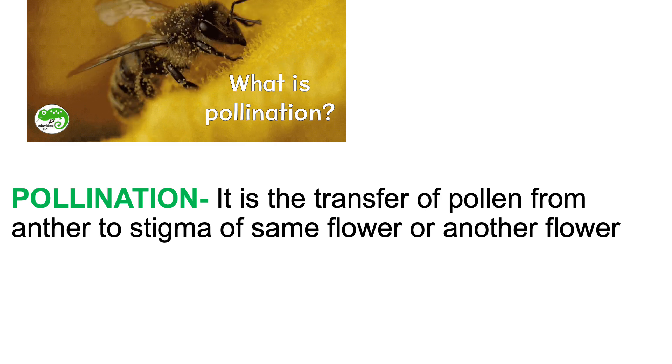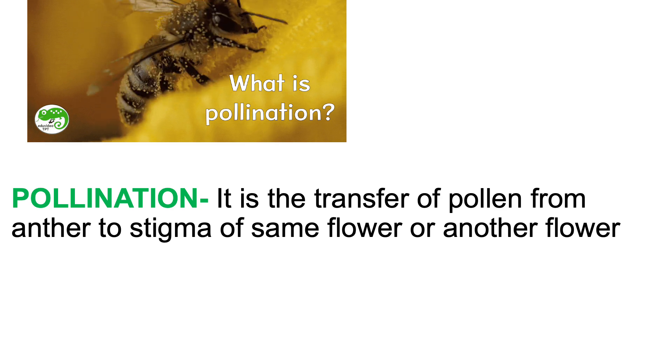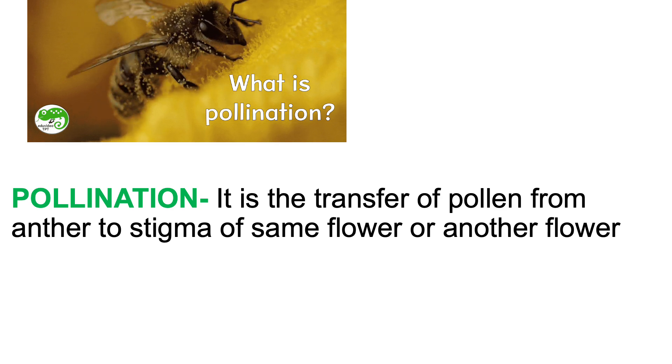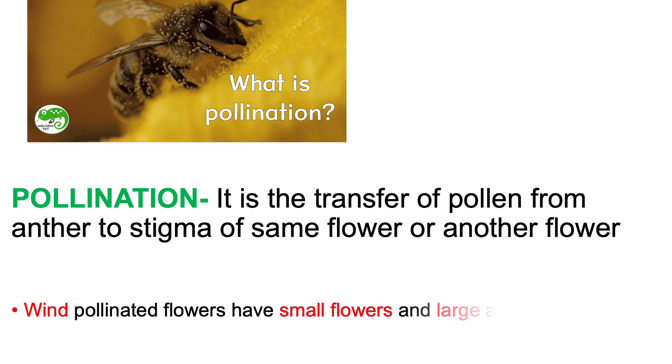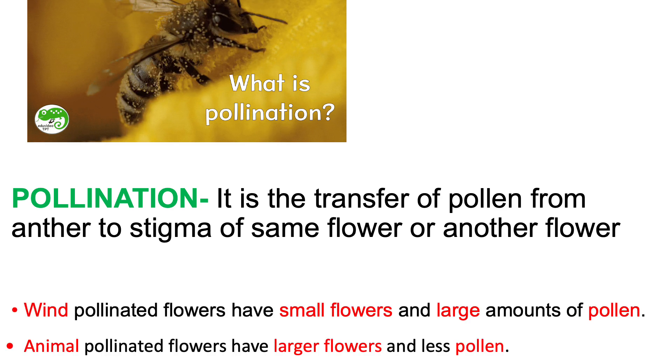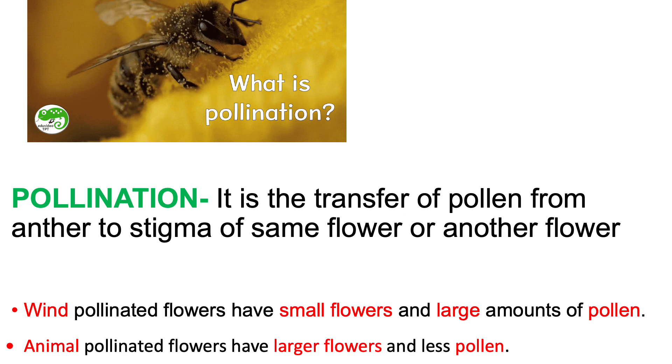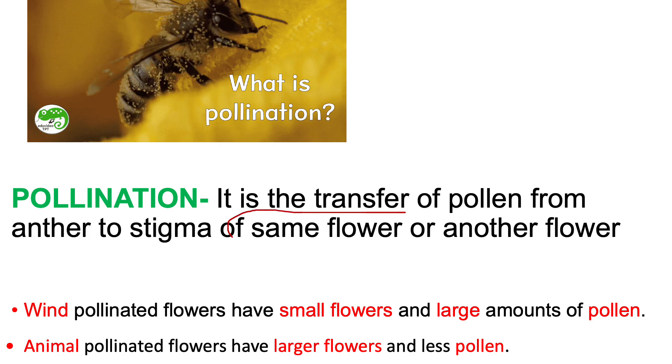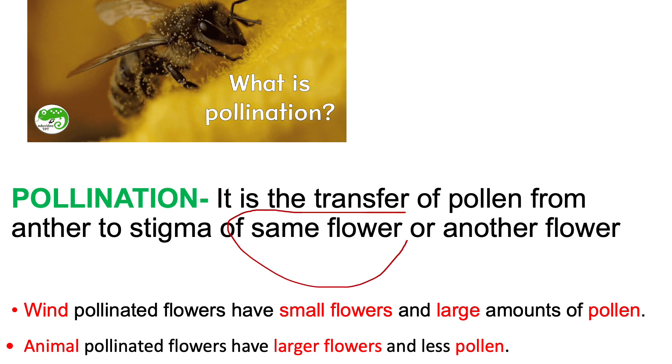This process of moving pollen grains from the anther to the stigma is called pollination. Pollination is the transfer of pollen from the anther to the stigma of the same flower or of another flower.